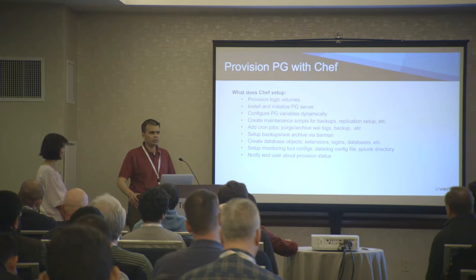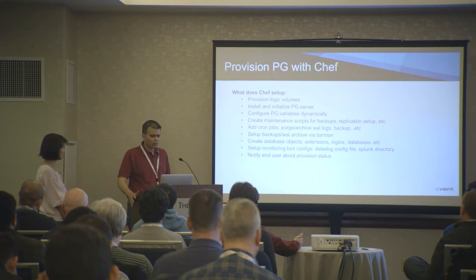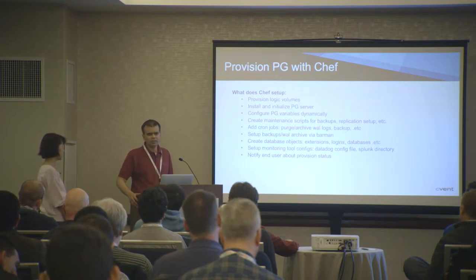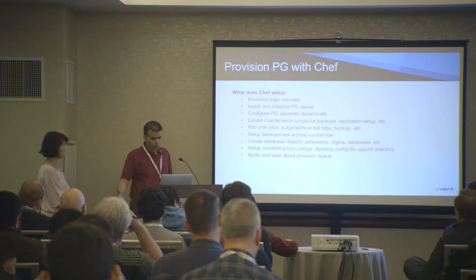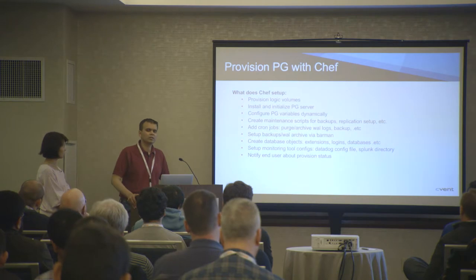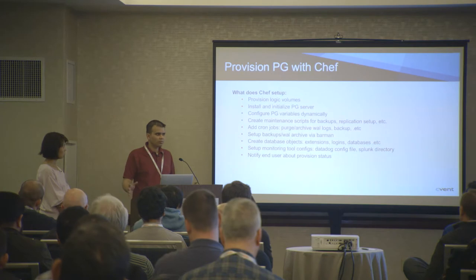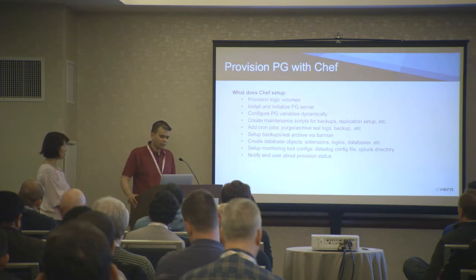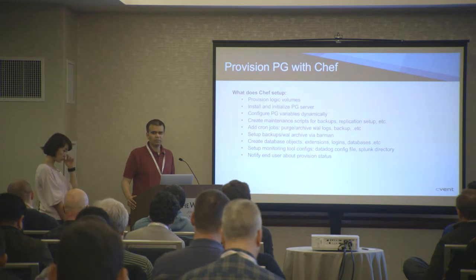We then install and initialize the Postgres server. At this point, you can choose what version to install — we started with 9.4, most of our new servers are now 9.6, but you can still choose a specific version including a patch level, like 9.6.1. Then it configures Postgres variables dynamically — it looks at the hardware and tries to follow recommended best practices to set shared buffer size, memory allocation, WAL compression, and so forth. It also deploys standard scripts for backups, setting up replication, and basic maintenance tasks like vacuum.